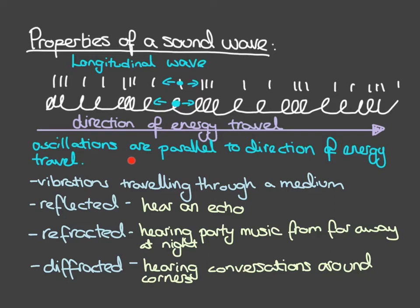Sound waves are just oscillations — just vibrations traveling through a medium. That medium can vary, and that has different effects on the wave. But sound waves, like all waves, can be reflected, refracted, and diffracted, and we observe these processes all the time. If we hear an echo, that is a sound wave being reflected. If late at night you can hear music from a party far away, that is sound waves being refracted. And if you can hear a conversation around a corner but can't see the person, that is sound waves being diffracted.